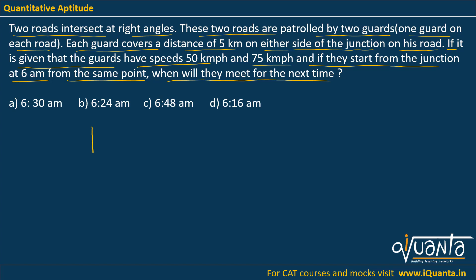So the situation is very clear over here. We have two roads, this is road one, this is road two, these are intersecting at right angles. We have two guards, one on each road. They can only go 5 km from this junction. So this distance will be 5 km, this will be 5, this will be 5, this will be 5.